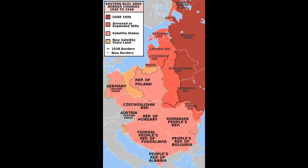In the late 1940s, pro-Soviet communist parties took power in Poland, Czechoslovakia, Hungary, Romania, Yugoslavia, Albania, and Bulgaria. They all built a Stalinist dictatorship system following the example of the Soviet Union and formed the Eastern Bloc.